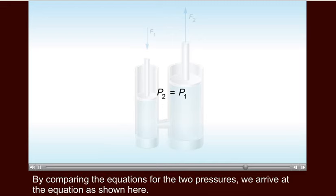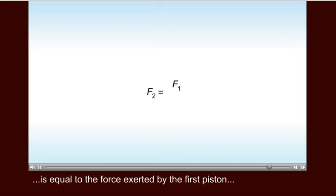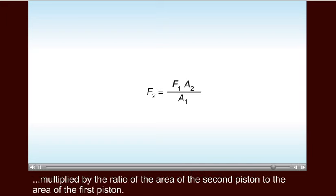By comparing the equations for the two pressures, we arrive at the equation as shown here. Thus, the force exerted by the second piston is equal to the force exerted by the first piston multiplied by the ratio of the area of the second piston to the area of the first piston.